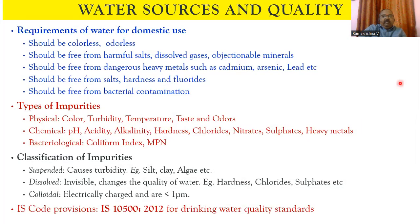For domestic use, water requirements are: it should be colorless, odorless, free from harmful salts, dissolved gases, and objectionable minerals. It should be free from dangerous heavy metals such as cadmium, arsenic, and lead, which mainly come from industrial wastewaters joining surface water bodies. It should be free from salts, hardness, fluorides, and also free from bacterial contamination.